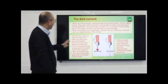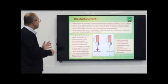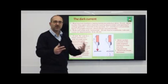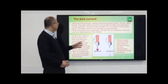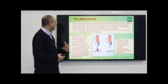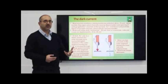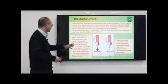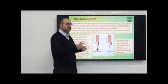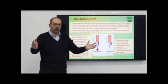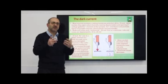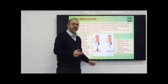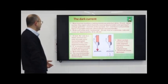Let's talk about the dark current. Neurons have a resting potential, and when excited they depolarize, releasing neurotransmitters. Rod and cone cells work the opposite way — they are excited in darkness, releasing the neurotransmitter glutamate when there is no light, and they're already depolarized. In light, the channels close, preventing sodium and calcium ions from entering the cell, causing a decrease in neurotransmitter release. This decrease is the visual signal.